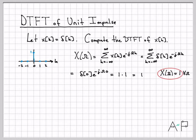x of omega is actually equal to one for all omega. So that symbol right there, if you're not familiar with it, is for all. So kind of an interesting example, if I have a unit impulse, which is an impulse in time, I actually get a constant, a flat value of one in the frequency domain.